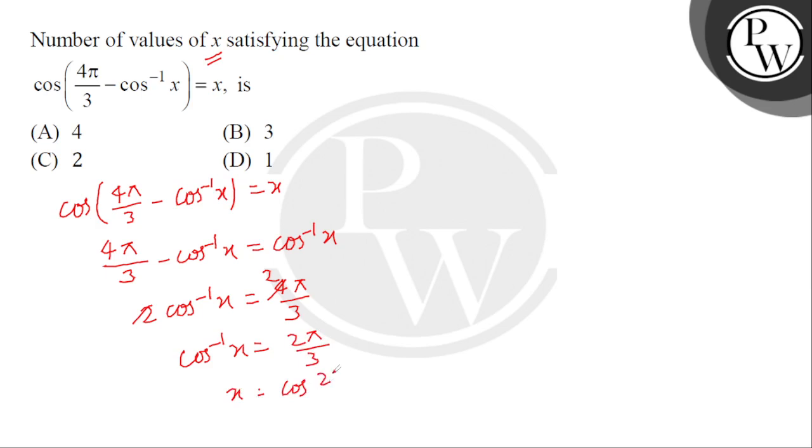So x = cos(π/3). The value of x is coming as 1/2. Only one value of x is satisfying the equation, so option D is correct.